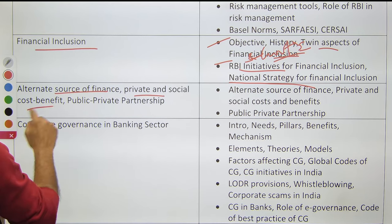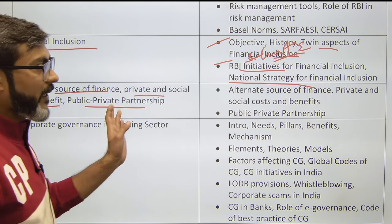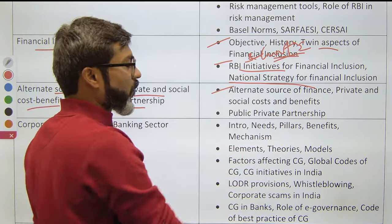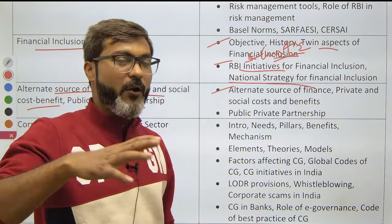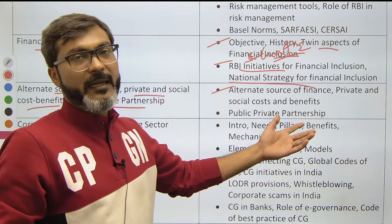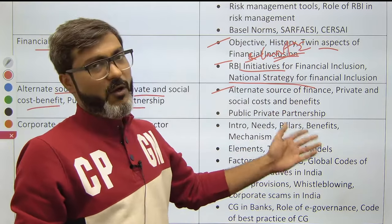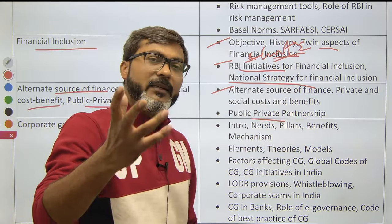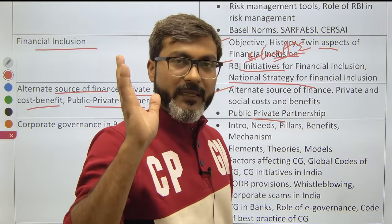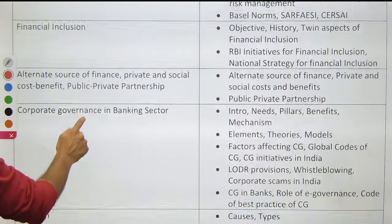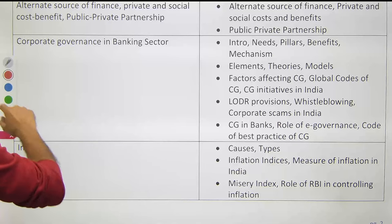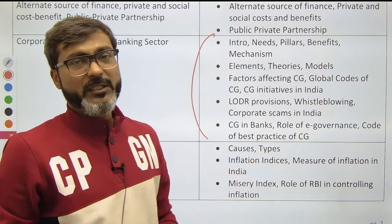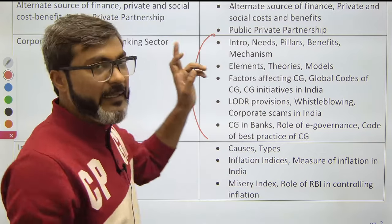The next topic is Alternate Sources of Finance. Cover public and private sources, social cost-benefit analysis, and PPP (Public-Private Partnership). You don't need to go into too much detail here as a lot of information is available online.